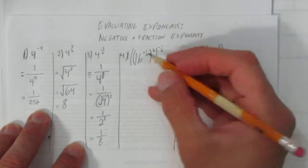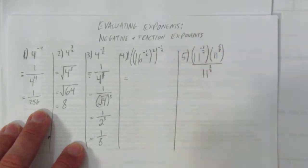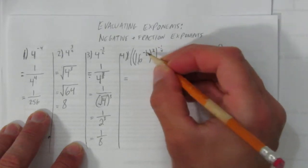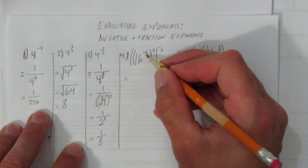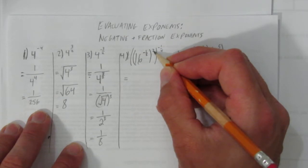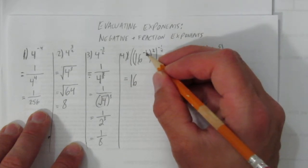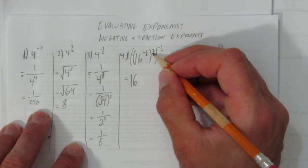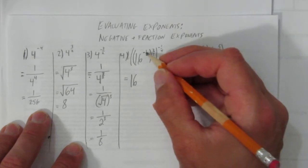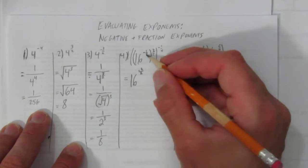Let's move on to the next one. This one has negative, positive, and fraction exponents together. Remember the rule: if you have an exponent on an exponent, you multiply exponents — that's called the power of a power. I'm going to leave the base 16. I've got negative one-half times 2. When multiplying fractions, top times top is negative 2, bottom times bottom is 2, giving negative 2 over 2.